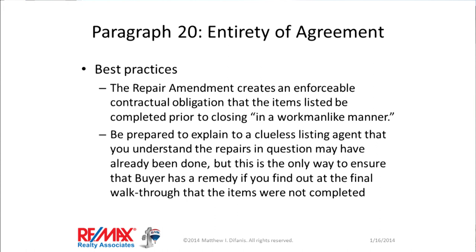But there's a solution. Use a repair amendment even if the seller has already told you they did it — and this will feel very weird. You're going to have to train the listing agent on the other side, who will ask: 'Why do you have a repair amendment for all the stuff they already said they did?' Because the repair amendment is the only way to create an enforceable obligation that the repairs separately represented as having been made can actually be raised as unsatisfactory, with an enforceable obligation to correct them and deliver those items repaired in a workmanlike manner.